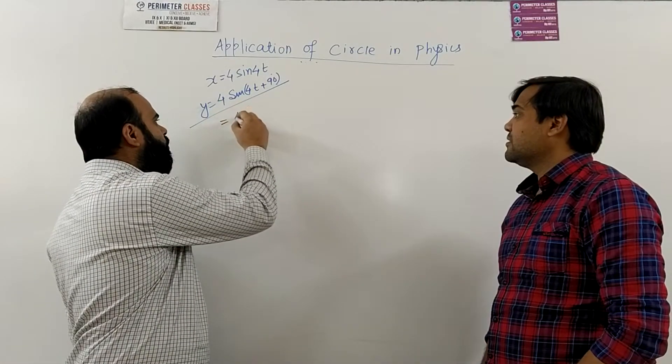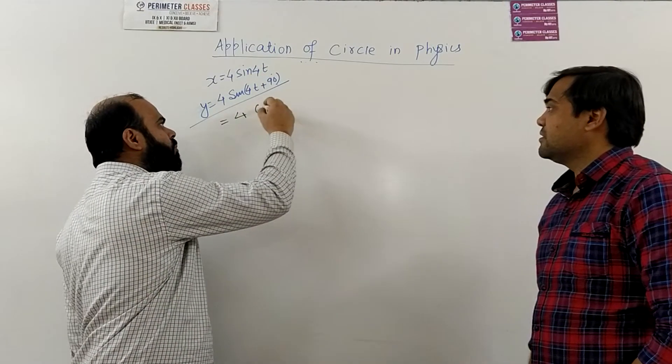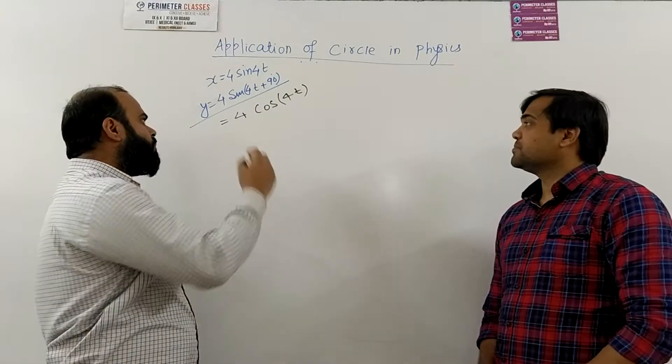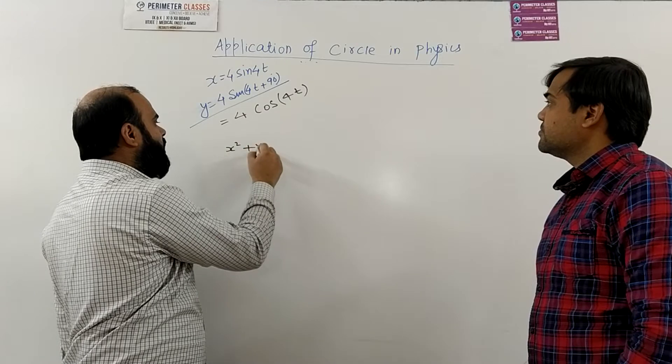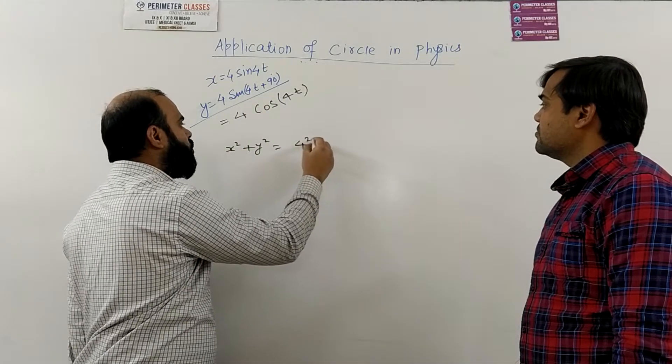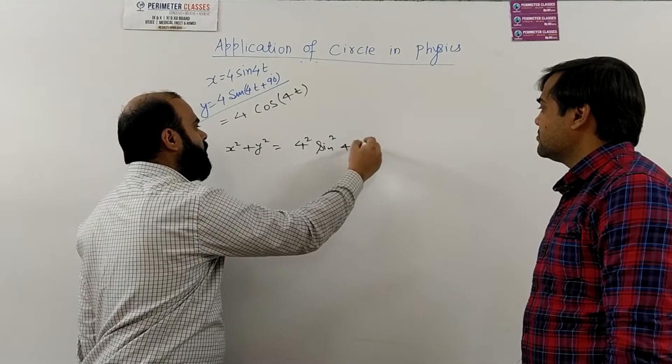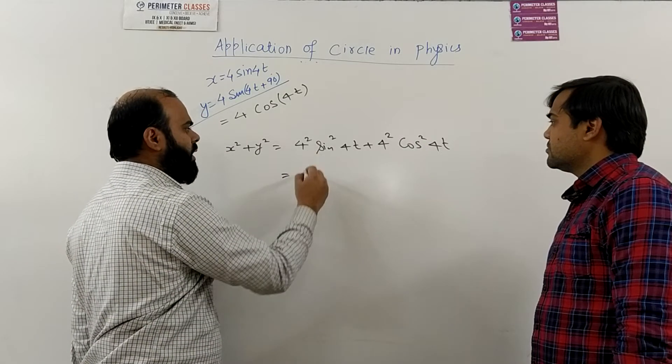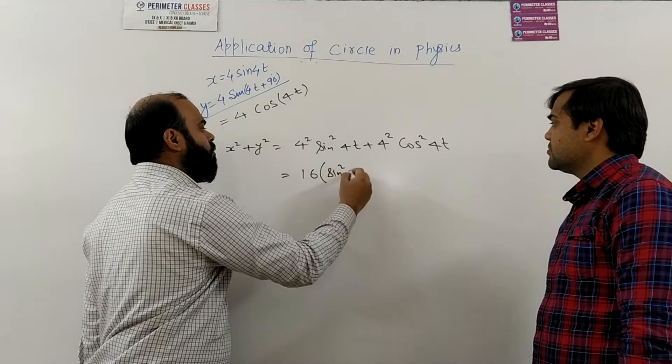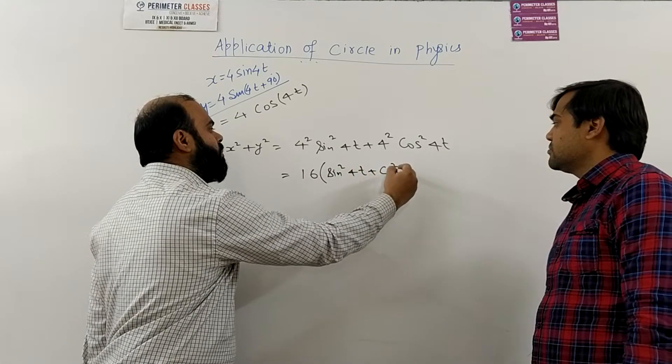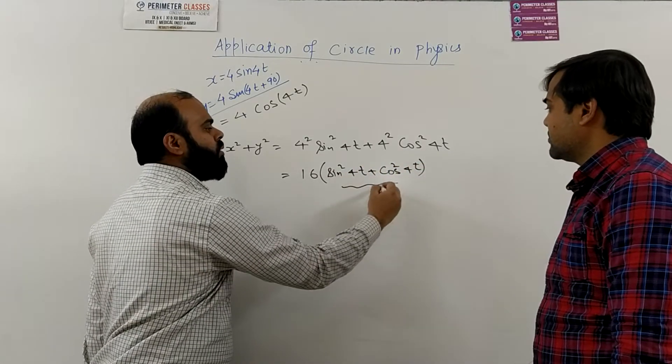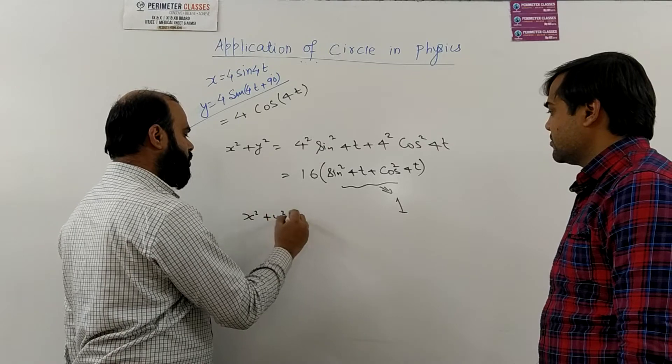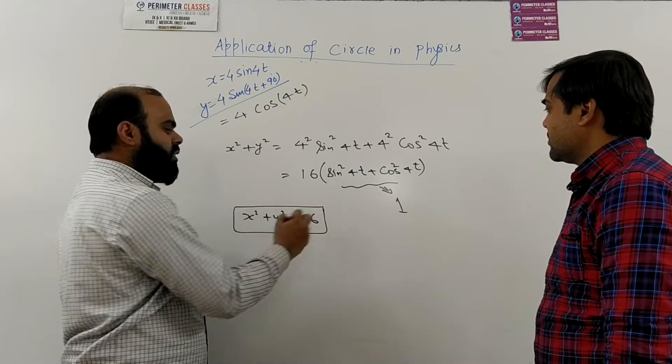So basically here this becomes 4 sin 40°, plus 90° will become cos 40° by your concept of allied angles in trigonometry. So when you square both of them and add, 4² sin² 40° plus 4² cos² 40°, you get 4² as 16 and sin² 40° plus cos² 40° which is actually equal to 1. So this is 16. So x² + y² = 16 is the equation which is the answer.